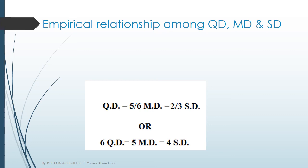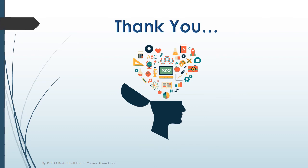The empirical relationship among QD, MD, and SD is: QD equals (5/6) MD equals (2/3) SD, or equivalently, 6 QD equals 5 MD equals 4 SD. Thank you for watching my video. We will meet soon in the next session.